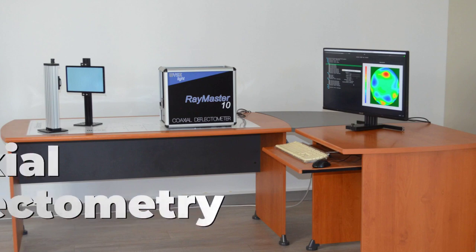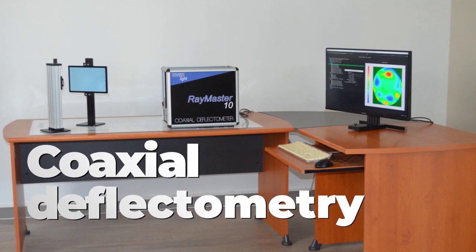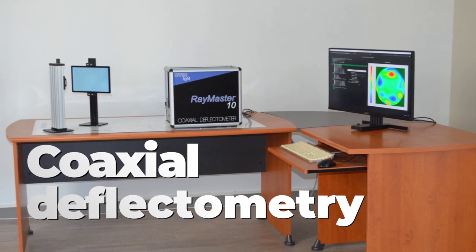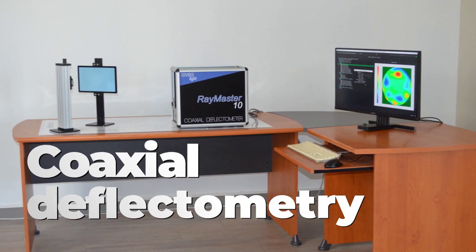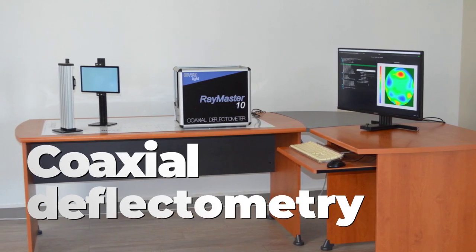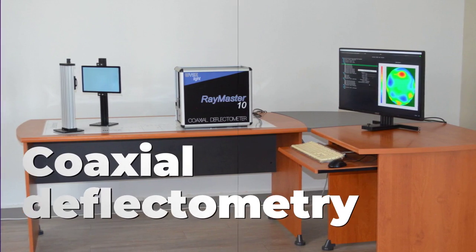Sorel named his invention coaxial deflectometry. He created WiseLight to patent coaxial deflectometry and designed the Raymaster 10, a measurement instrument that rivals interferometers in accuracy but retains the simplicity and cost-effectiveness of deflectometry.